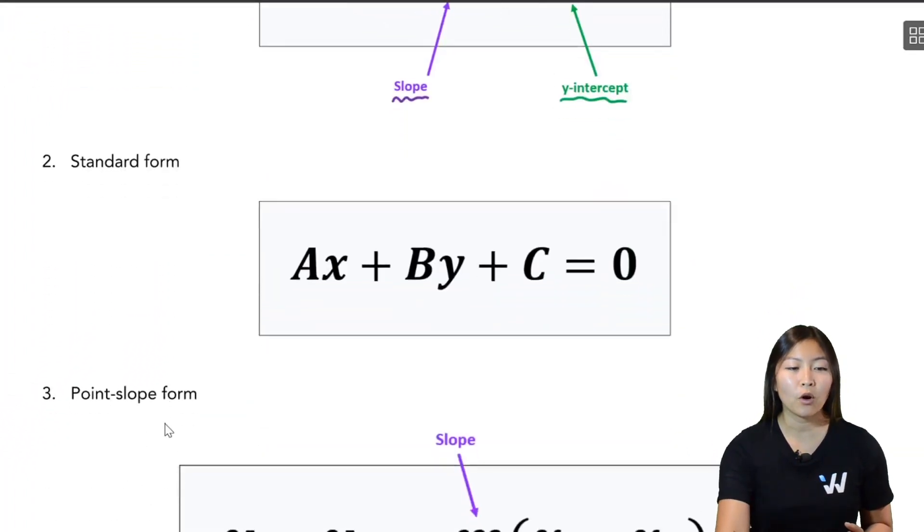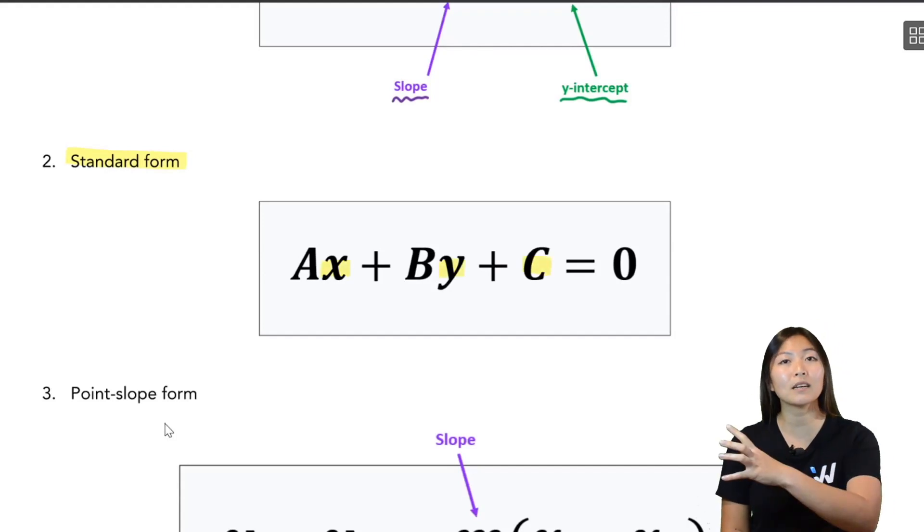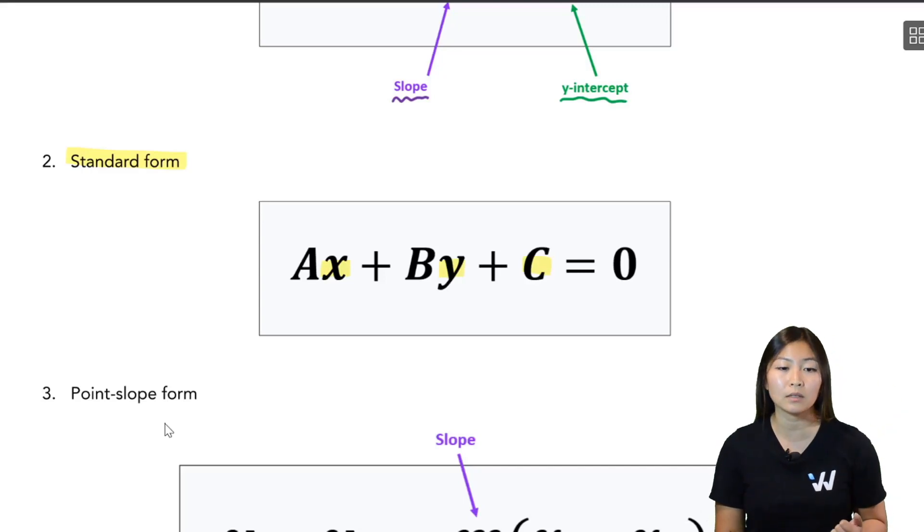Now you have another form called the standard form. It's standard form because you have all your x's, then your y's, and then your constants all on one side of the equation and the other side equals zero. Not the most useful when it comes to graphing, but sometimes we'll be asked to convert between the forms.